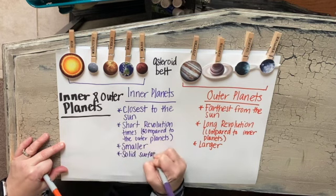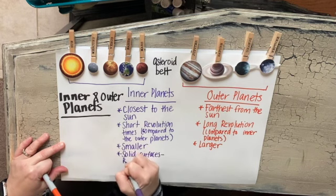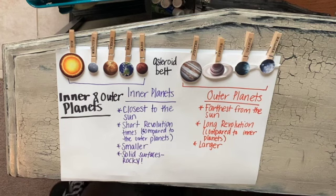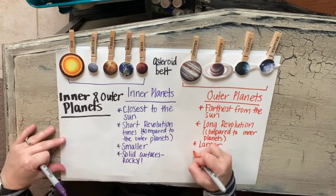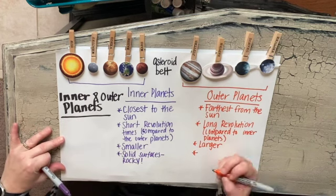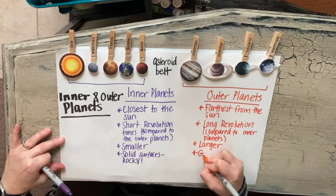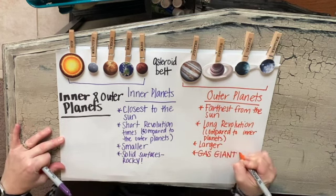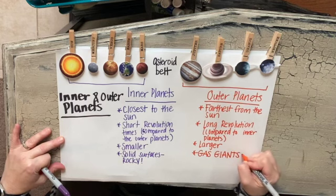All of the inner planets have solid surfaces — they are rocky. Whereas those outer planets, we call them the gas giants; they are gaseous and they don't have solid surfaces.